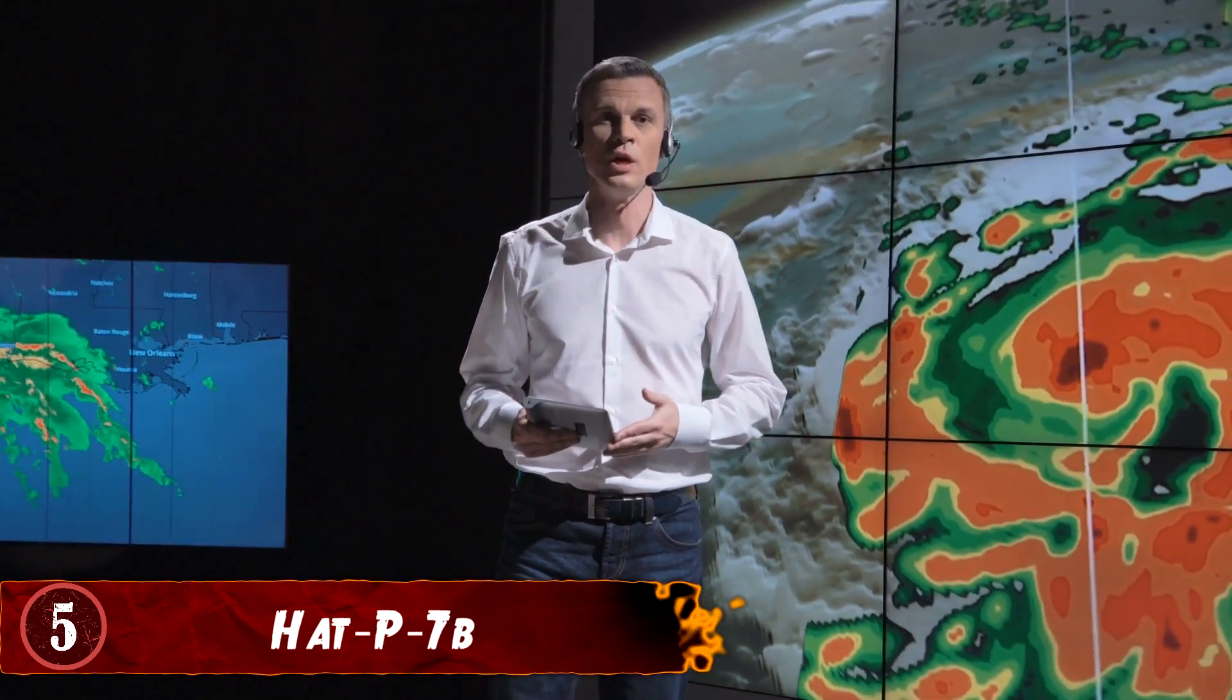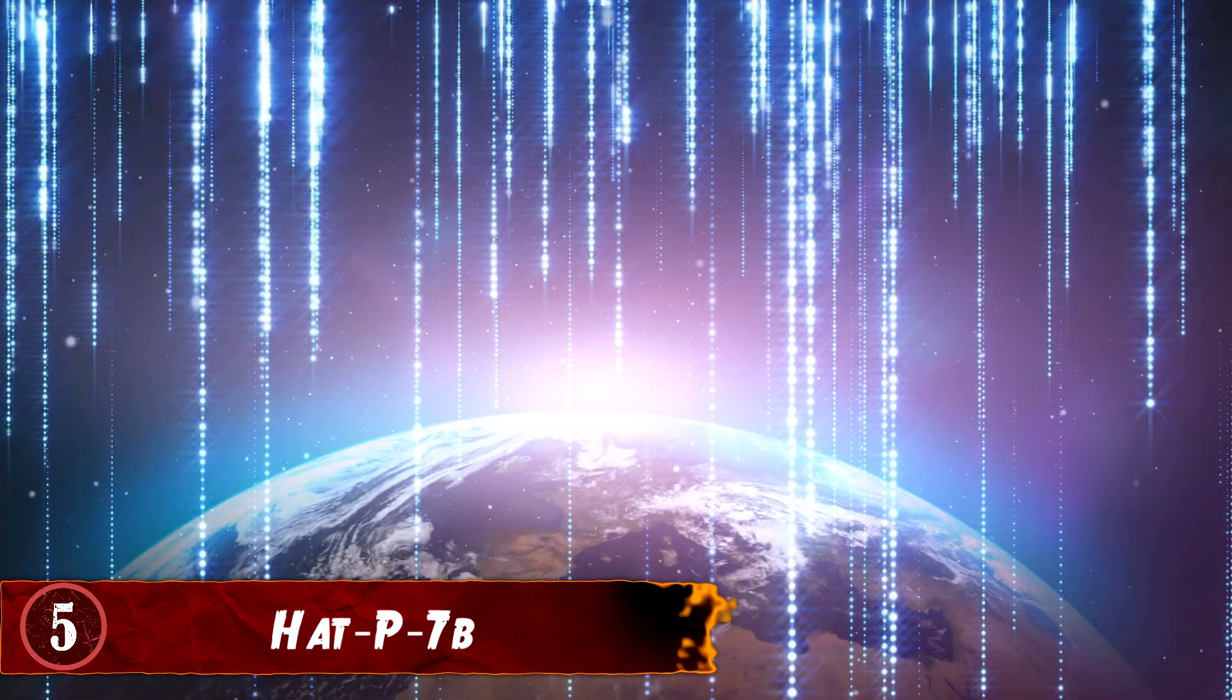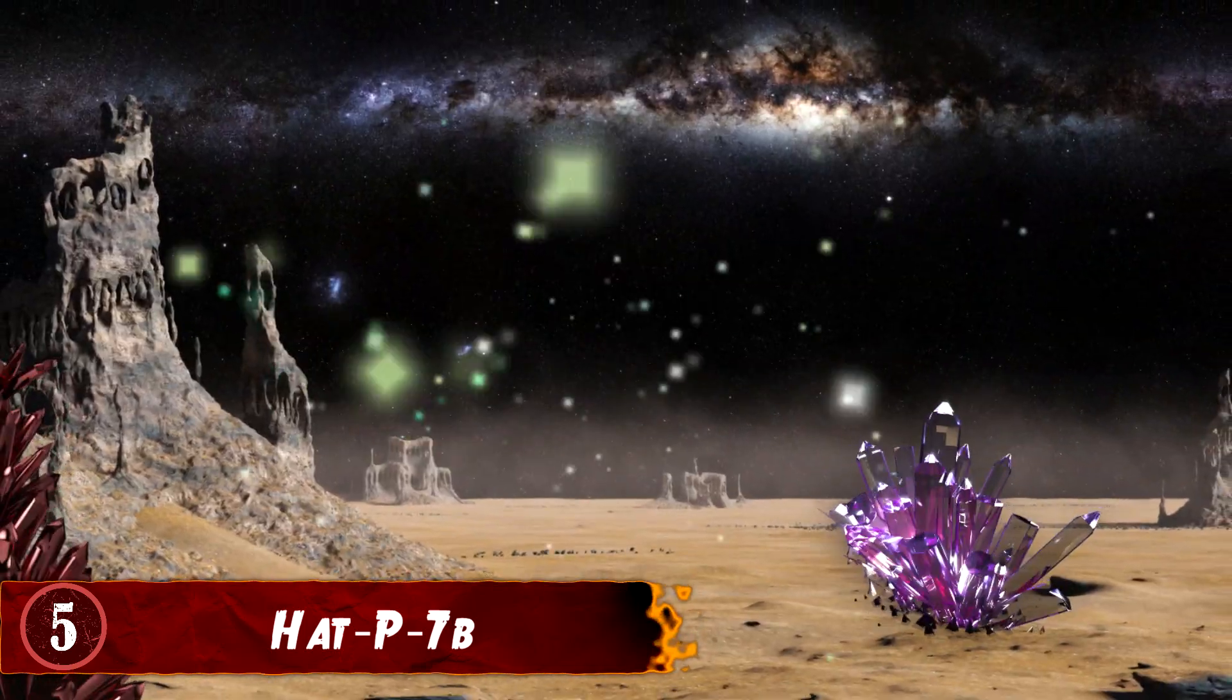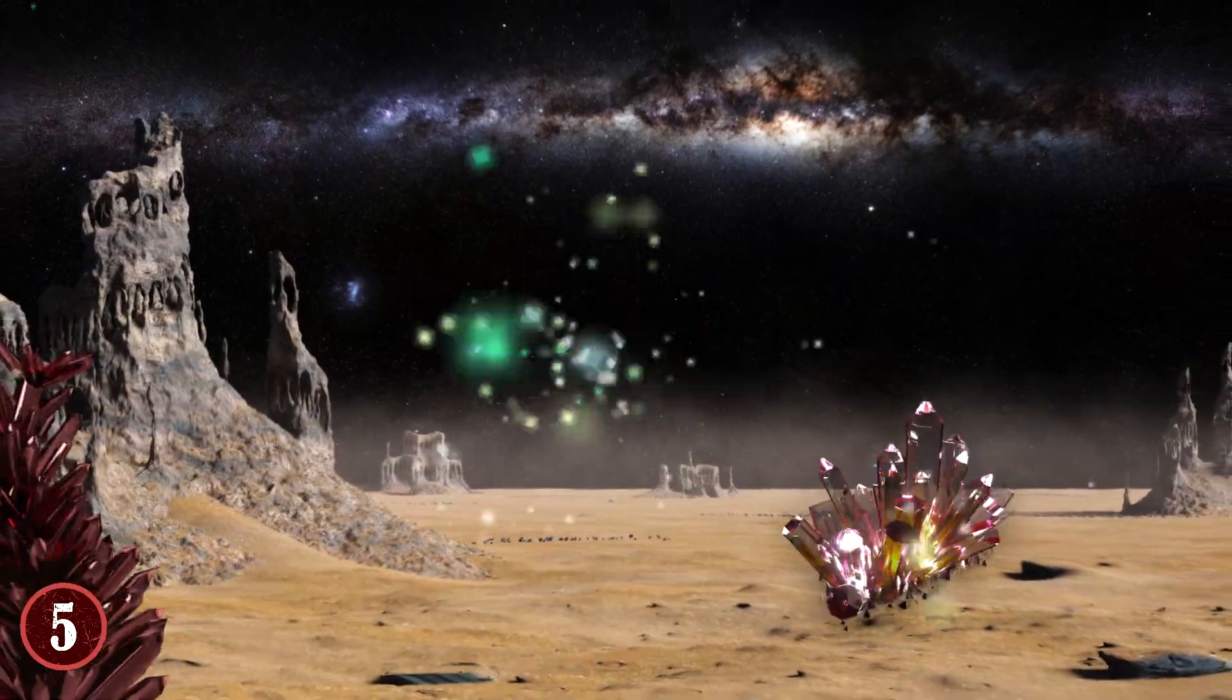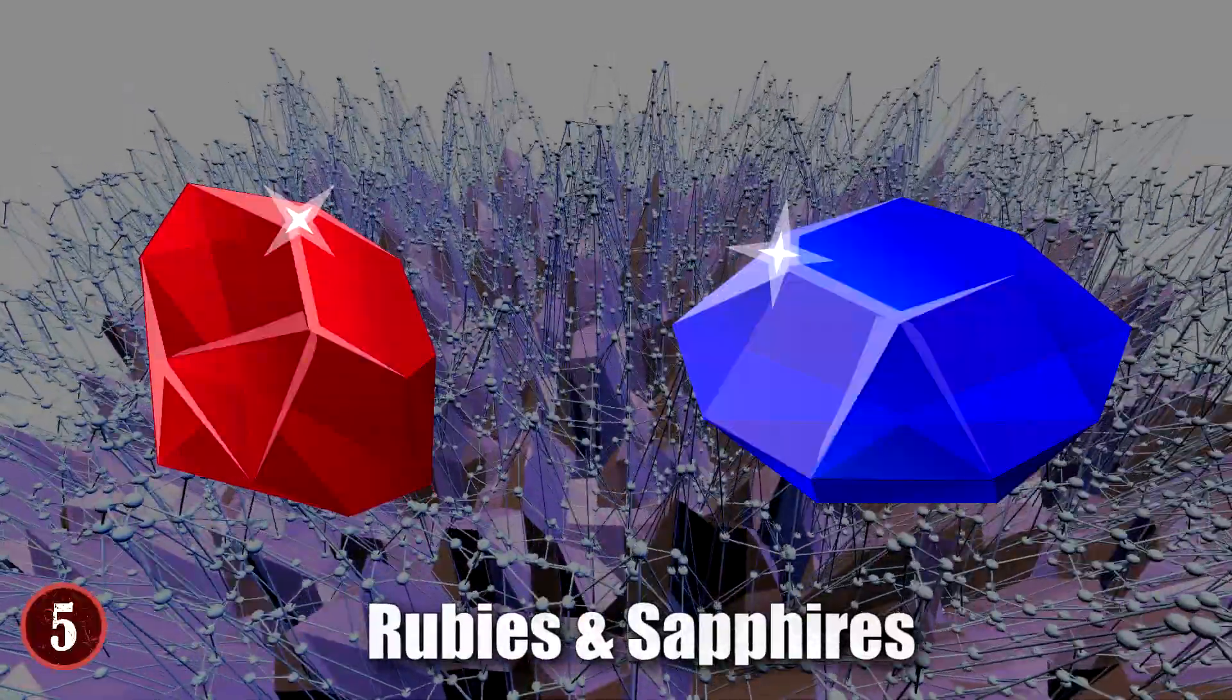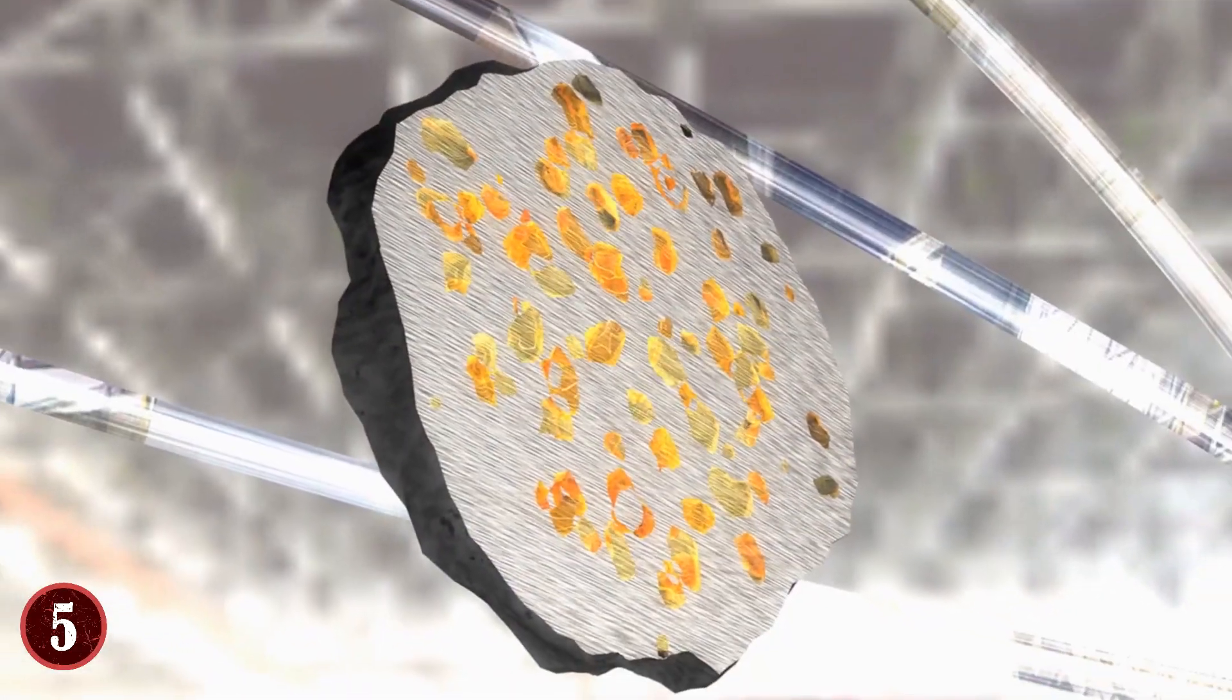Number 5: Hat P7b. On Earth, weather patterns help determine how people interact with the day at hand. But one thing that they never have to worry about is it raining precious gems. Unlike Hat P7b, where that just happens all the time. This is a planet that quite literally rains rubies and sapphires.